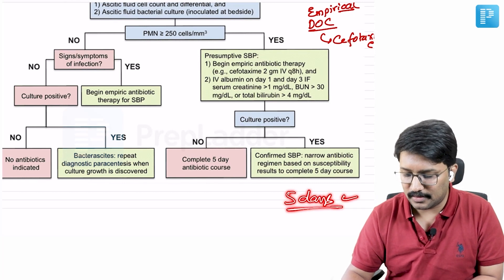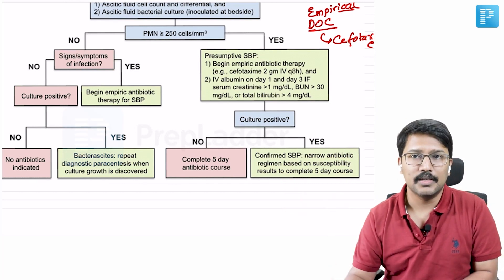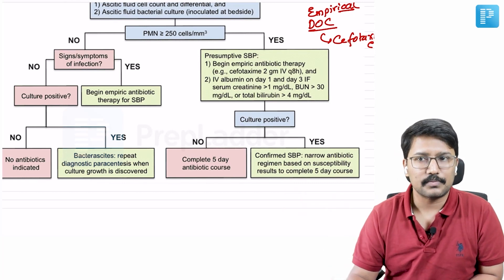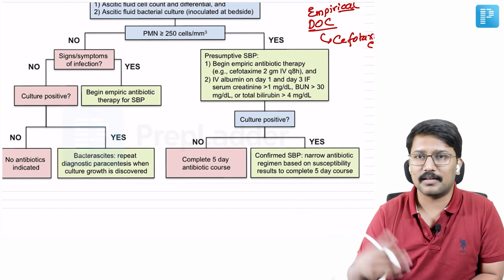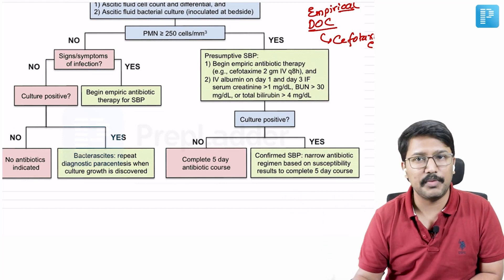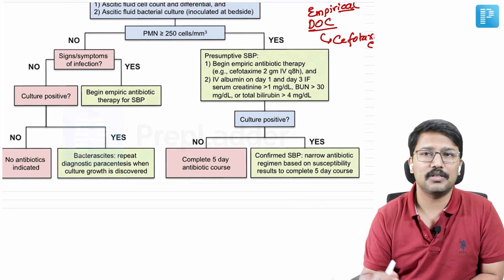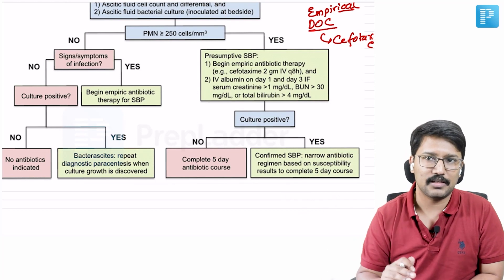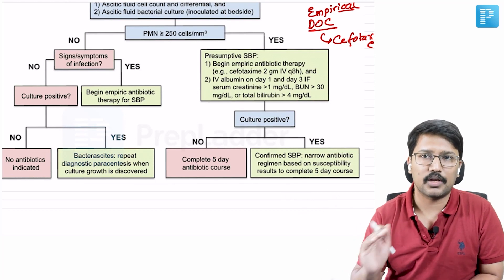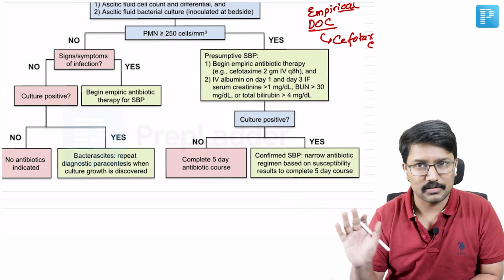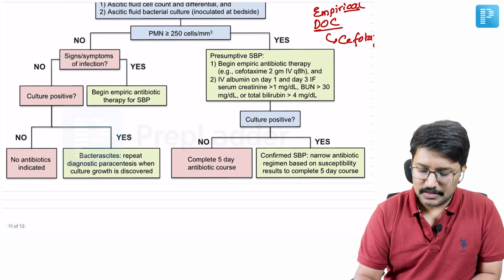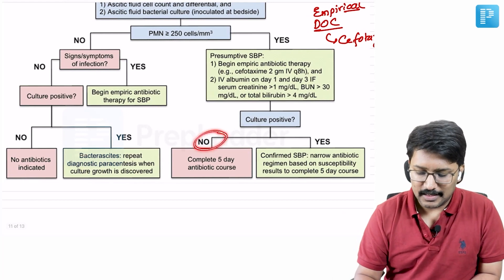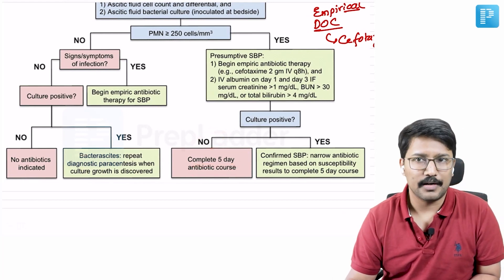The story does not end there — we have to think of long-term therapy. Once a patient has had SBP, recurrence rates are extremely high, so probably as long as the patient is going to have ascites, we may need to keep giving antibiotics prophylactically. If the culture is negative, you still complete a full course of antibiotics.